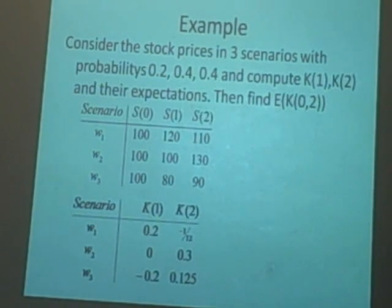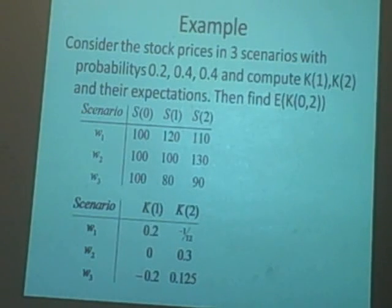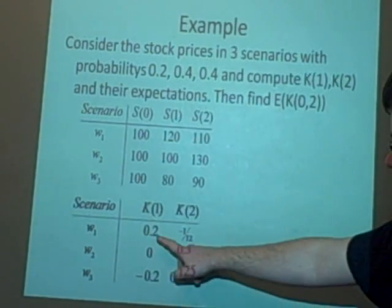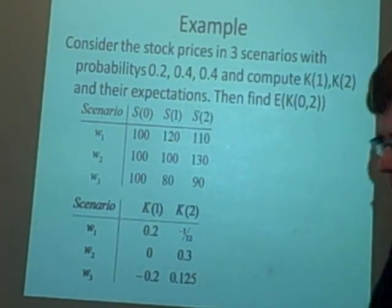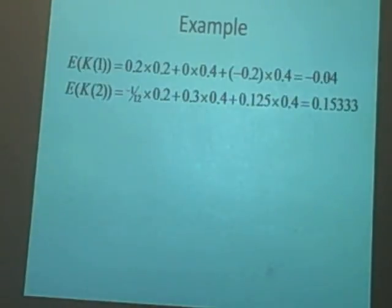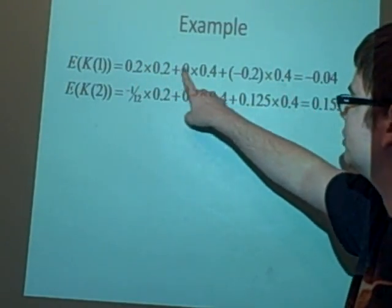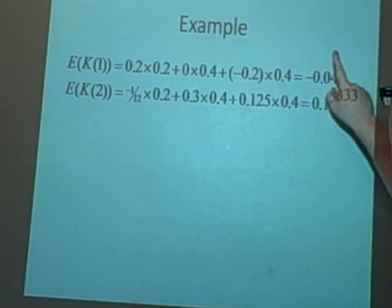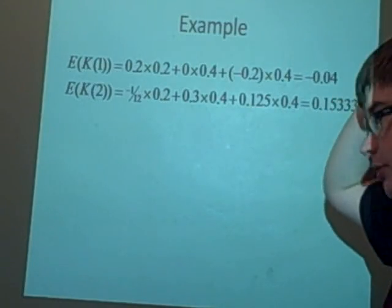Now that we've found K(1) and K(2) for the different scenarios, we want to find the expected value. We're going to simply add them up while multiplying by each of their probabilities. We've got 0.2, 0.4, 0.4 times 0.2, times 0, times minus 0.2, which gives us minus 0.04. That's the expectation of K(1).